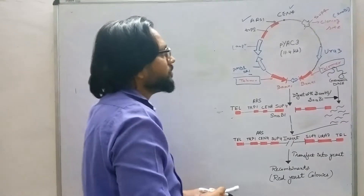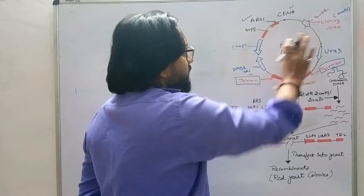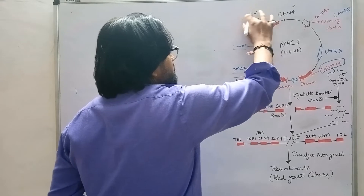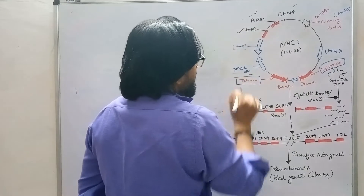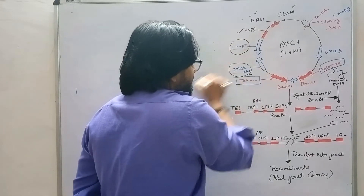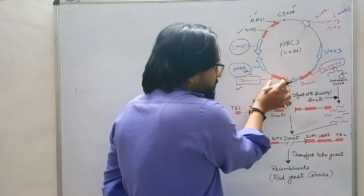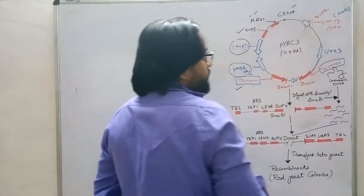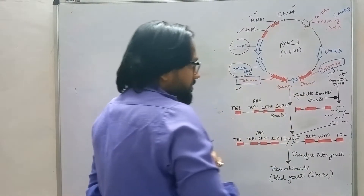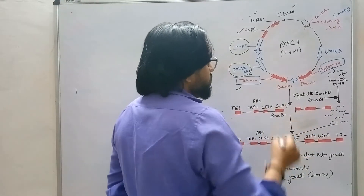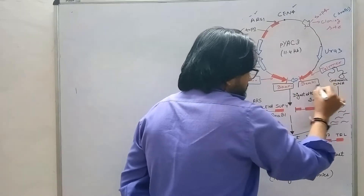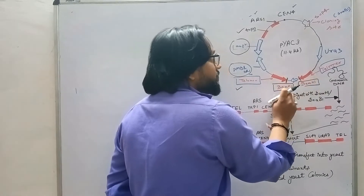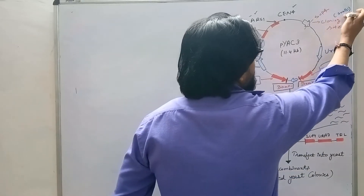Here we have taken the example of YAC-3. It is a molecule of 11.4 KB. It has the following components: centromere, autonomous replicating sequence, tryptophan-1 gene, sequences required for bacterial cell selection, telomere sequences at both ends, URA3 gene, and SUP4 gene. For inserting a gene, we need restriction sites. There is a BamH1 restriction site at the end of the telomere sequence, and an SnaB1 restriction site within the SUP4 gene.